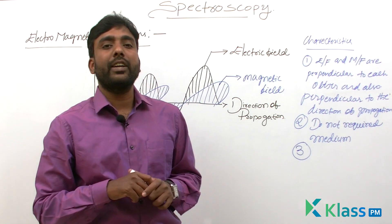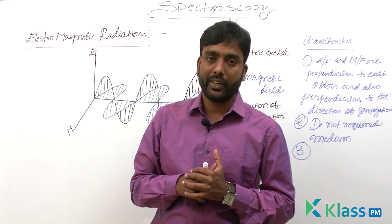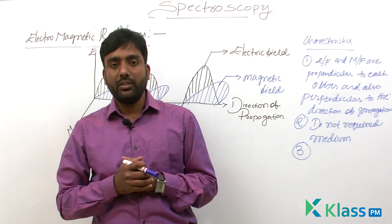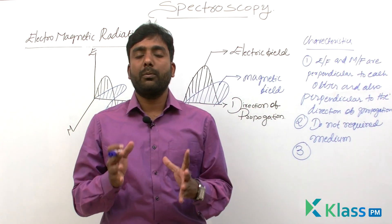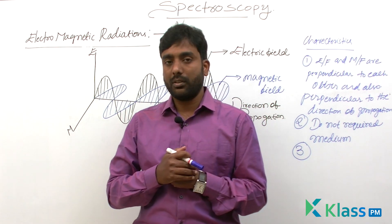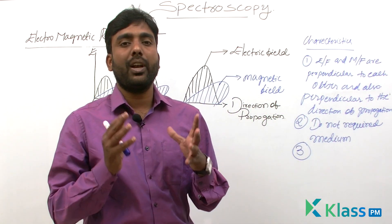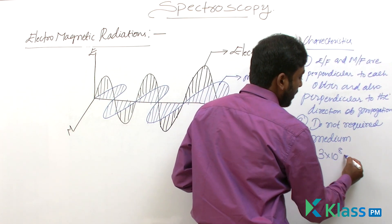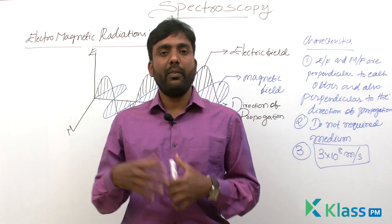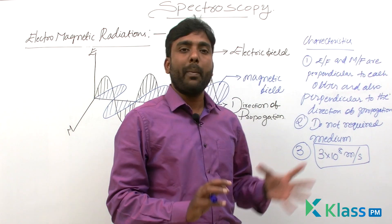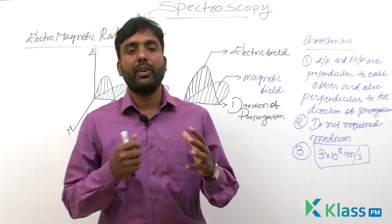The third characteristic: there are different types of electromagnetic radiations, which we will see in the next class. Even though they have different properties and parameters, all of them propagate with the same velocity in space. That velocity is equal to the velocity of light, which is 3 × 10⁸ meters per second. All types of electromagnetic radiations propagate with this equal velocity in space.